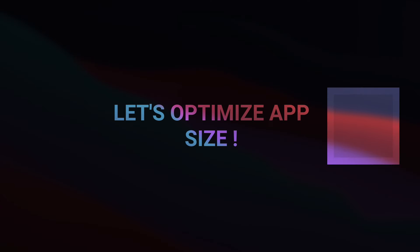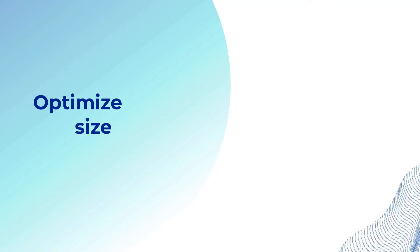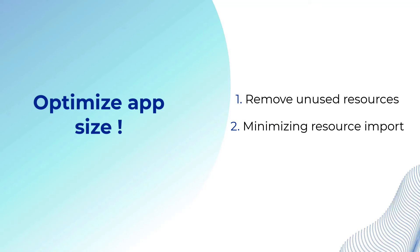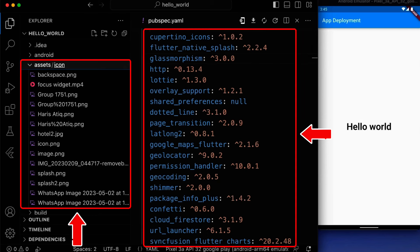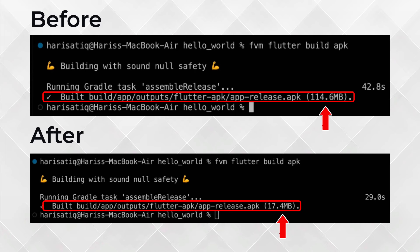Finally, let's optimize the app's size, because no one wants a bloated app that takes up more space than a herd of elephants on a trampoline. We can optimize our app size by using two steps: removing unused resources and minimizing resources imported from libraries. Here you can see I have many unused resources, like images in my assets folder and packages in my pubspec.yml file. I can remove these resources, and you can see the difference between the sizes before and after the optimization.